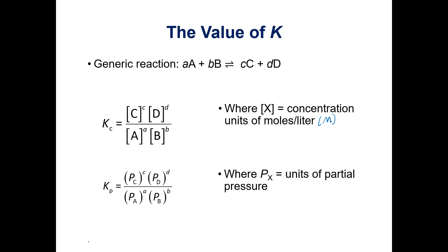We can also write an expression using partial pressures. When we have gases, it's sometimes easier to measure pressure than concentration. We can write the equilibrium constant in terms of the partial pressures raised to their stoichiometric coefficients rather than concentrations. We can relate the two using: Kp = Kc × (RT)^ΔN, where R is the gas constant, T is the temperature in Kelvin, and ΔN is the change in the number of moles.